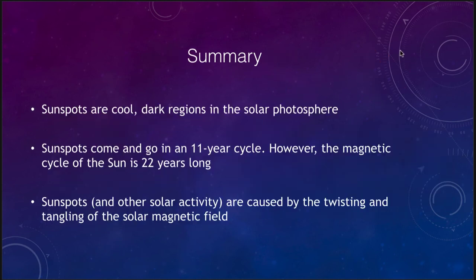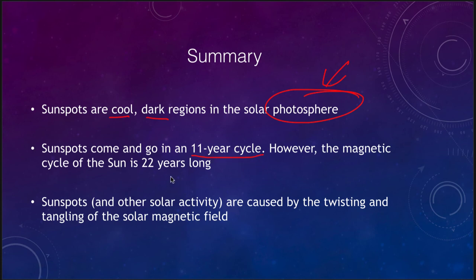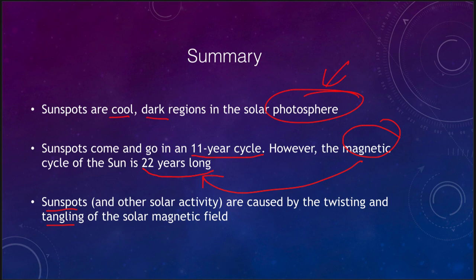In summary: sunspots are the cool dark regions on the photosphere of the Sun, visible on the surface as darker areas. They come and go in an 11-year cycle, however the entire magnetic cycle of the Sun is 22 years long. Sunspots and other solar activity are all caused by the twisting and tangling of the solar magnetic field due to differential rotation. That concludes our lecture on the solar cycle — we'll be back next time for another topic in astronomy. Have a great day everyone, and I will see you in class.